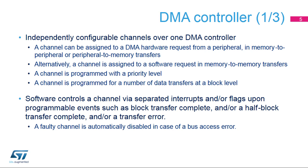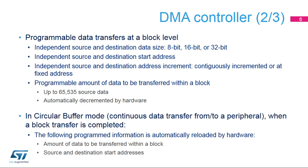A faulty channel is automatically disabled in case of a bus access error. A channel is programmed for a number of data transfers at a block level with independent source and destination data size, independent source and destination start address, independent source and destination address increment, either contiguously incremented or at a fixed address, and a programmable amount of data to be transferred within a block, up to 65,535 source data, automatically decremented by hardware.